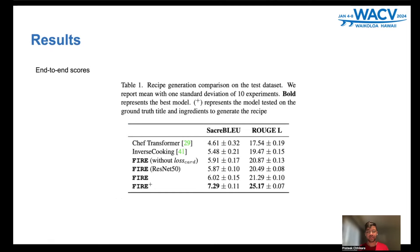These are the end-to-end scores. The two current baseline models are Chef Transformer and Inverse Cooking, and these are the four variations of FIRE. The first variation is FIRE without the cardinality loss in the ingredient generation pipeline, and FIRE with ResNet in place of ViT. Then there is our original FIRE, and FIRE+, which represents the model tested using ground-truth title and ingredients.